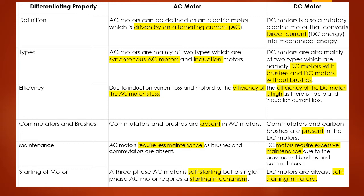Key differences between AC and DC motors: First, AC motors are driven by AC current while DC motors are driven by DC current. Second, AC motors are mainly of two types — synchronous and induction motors — while DC motors are of two types: brushed and brushless. Third, the efficiency of AC motors is less while DC motors have higher efficiency. Fourth, commutators and brushes are absent in AC motors but present in DC motors. Fifth, AC motors require less maintenance while DC motors require more intensive maintenance. Sixth, three-phase AC motors are self-starting, but single-phase AC motors require a starting mechanism, whereas DC motors are always self-starting.